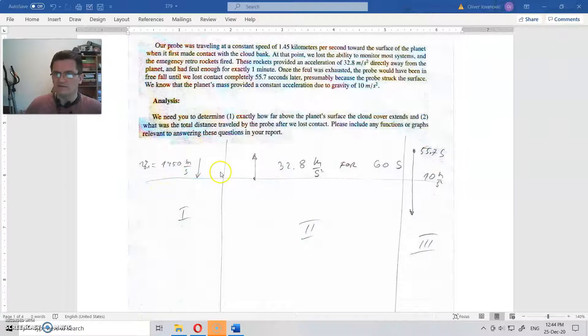What we have here is some kind of probe, and it's falling down. This was the initial speed. At the moment it hits the clouds, when it hit the clouds, we lost contact with the probe. But at this point here, retro boosters start and we get the acceleration.